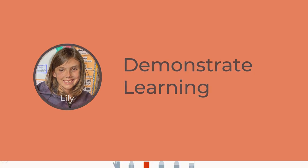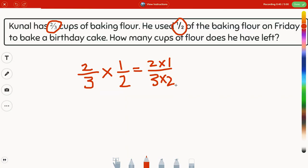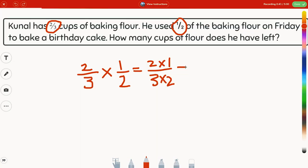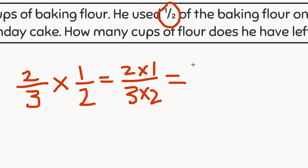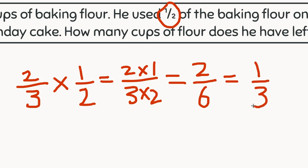So three times two equals six. My answer is two over six, or two-sixths. Oh, I can simplify that. Kunal has one-third of his flower left.